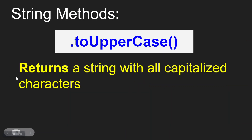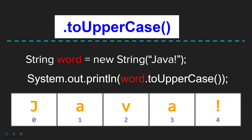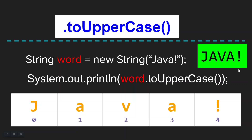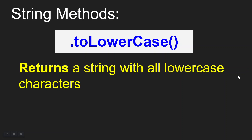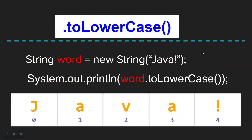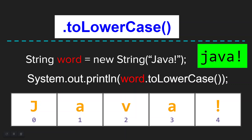Now we've got a couple of easy ones. There is the toUpperCase() method, and that's going to return a string with all capitalized letters. So if I printed word.toUpperCase(), what that's going to return is JAVA in all caps - obviously the exclamation point is unchanged. Similarly, you also have a toLowerCase() method. That's just going to take everything in the string and convert it to lowercase, so word.toLowerCase() would print java with that uppercase J converted to lowercase.